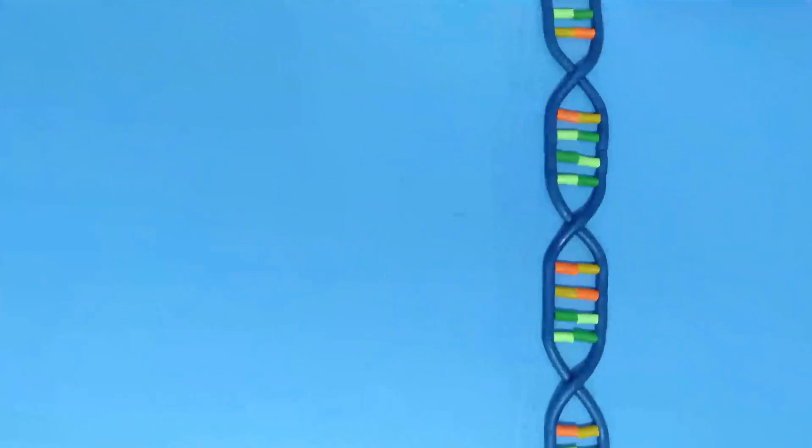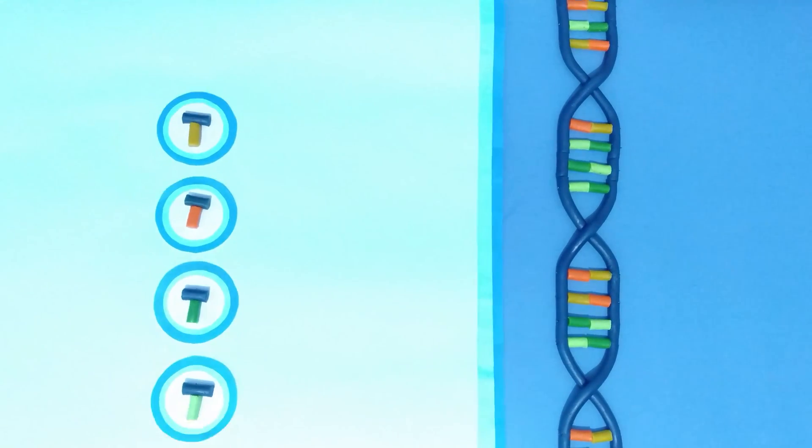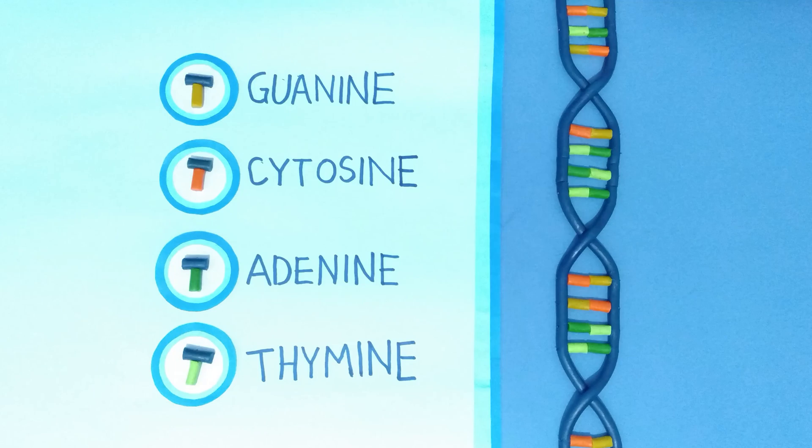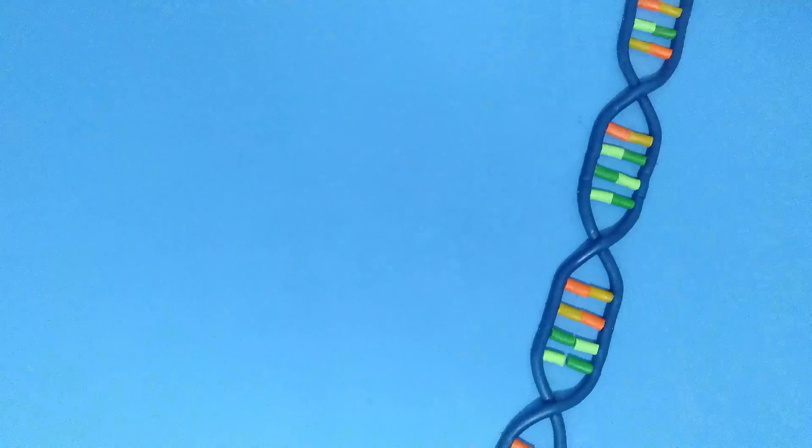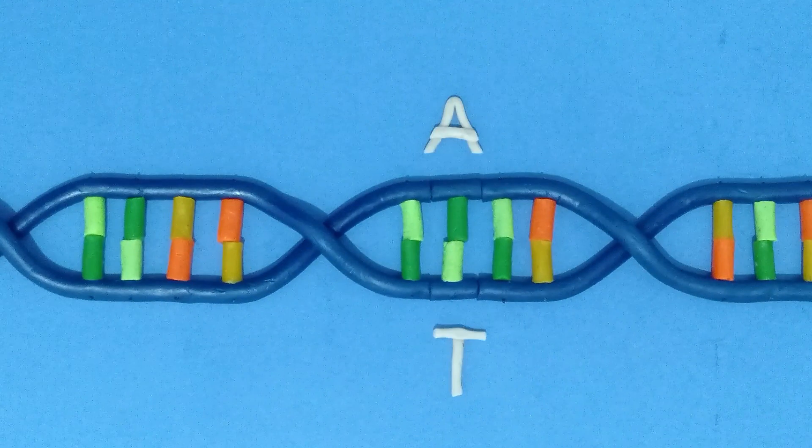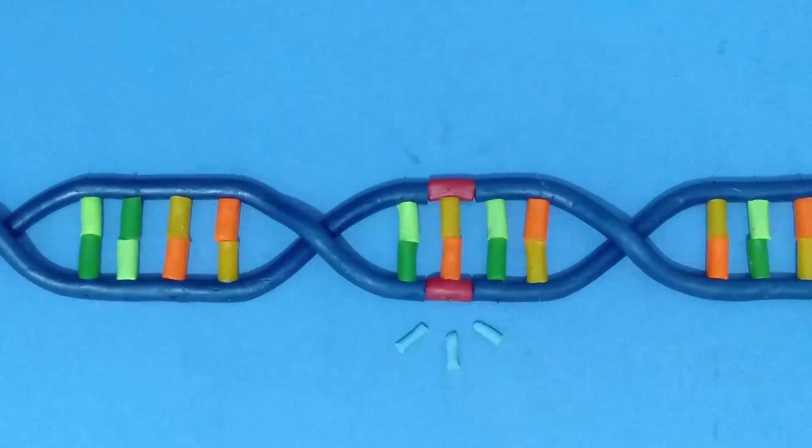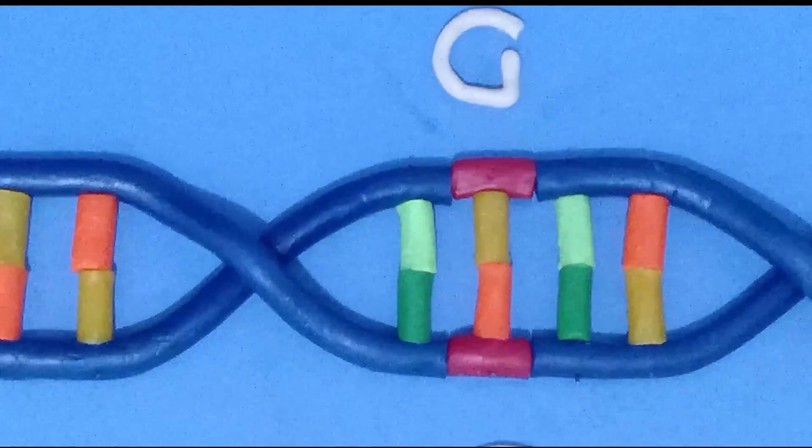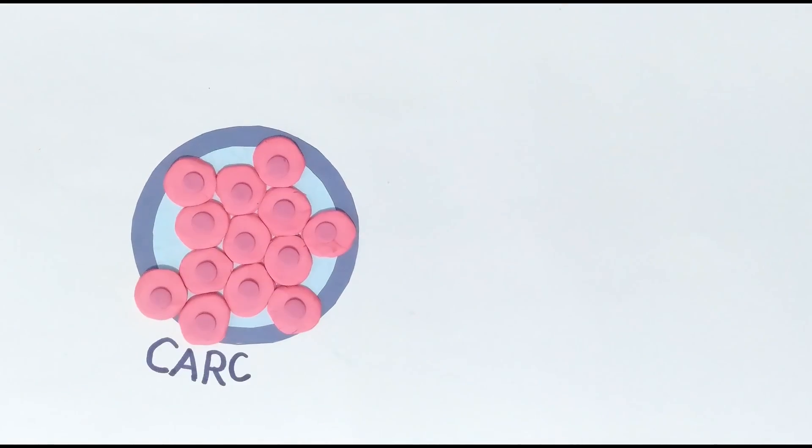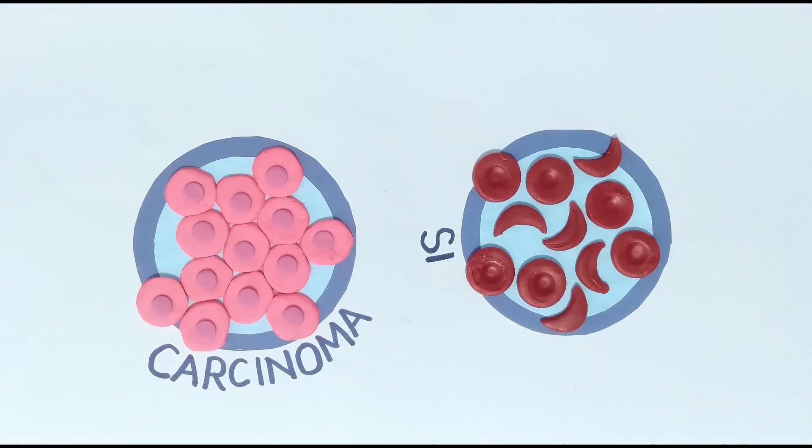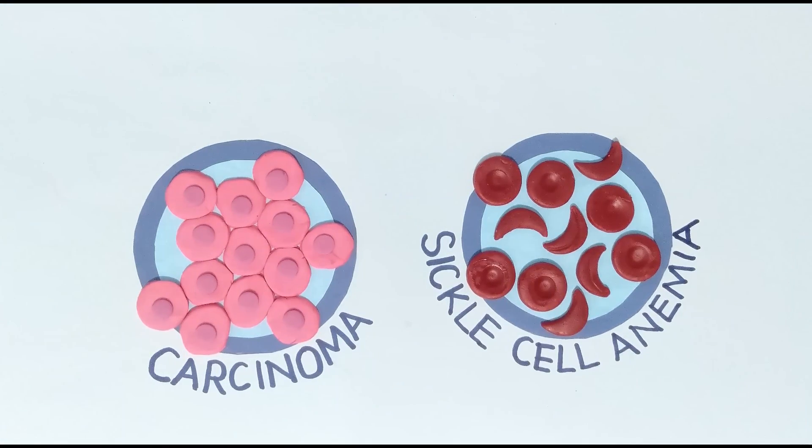Our DNA consists of nucleotides with four different bases. Sometimes a point mutation occurs in the coding region and changes a single base pair. This type of mutation is known to cause lots of different genetic diseases, such as certain types of cancer and sickle cell anemia.